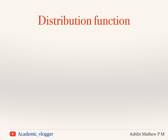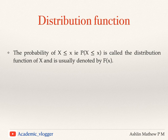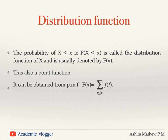Now we shall see what is a distribution function. The probability of capital X less than or equal to small x is defined as the distribution function of x. The probability mass function was defined as P(X = x), whereas here we consider P(X ≤ x). There is only a small change but that contributes to the difference. This is called the distribution function of x, denoted by capital F(x), and it can be obtained from the PMF as F(x) = Σ f(t) for all t ≤ x. It is like a cumulative sum of the probability mass functions.